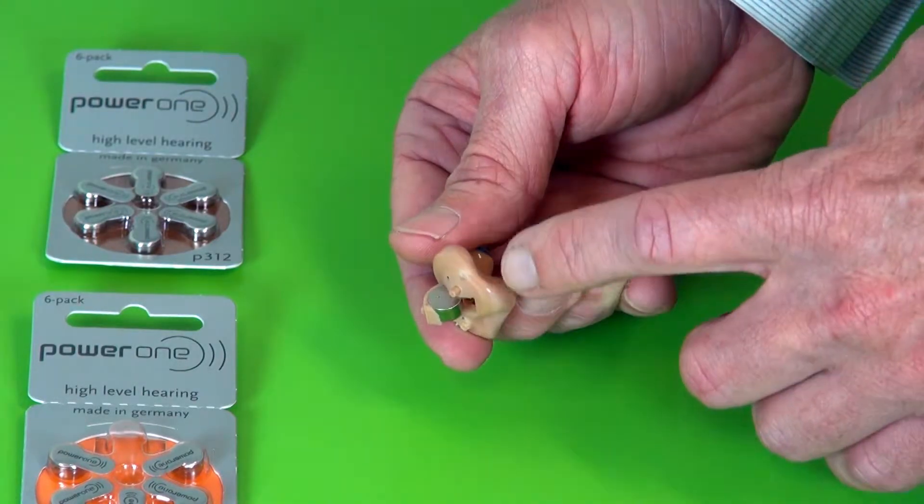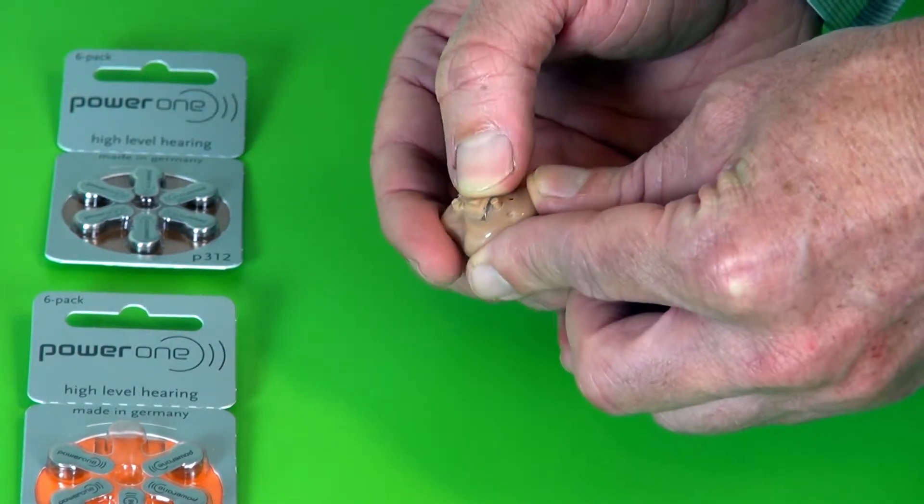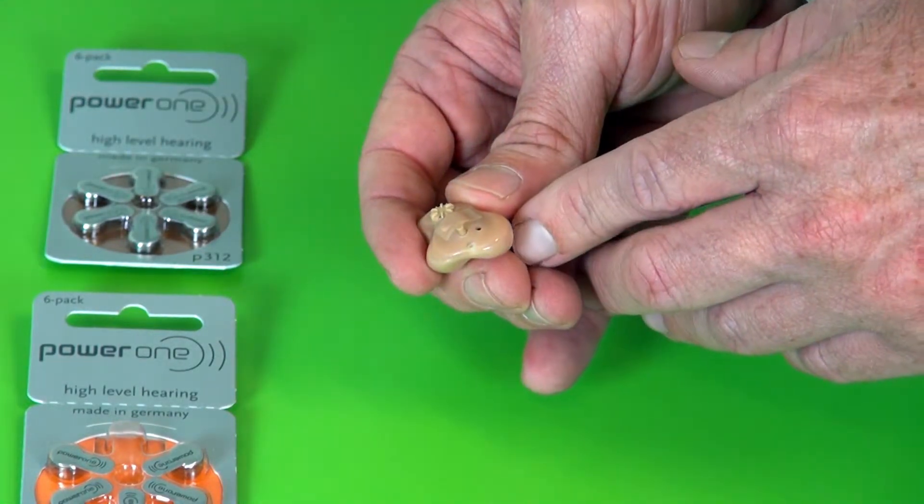So you can see now the hearing aid battery is sitting flush with the battery door. Then it will close nice and easily without any force. That will turn the hearing aid on.